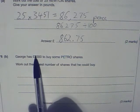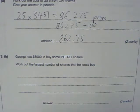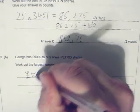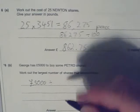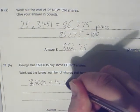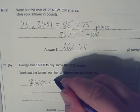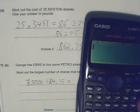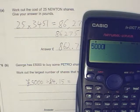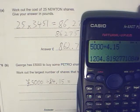So that's what I need to do - divide the number of pounds George has by the price. Got five thousand pounds, and I want to divide that by the price, which is 415 pence. But 415 pence is the same as four pounds fifteen. Since this part is in pounds, this has to be in pounds as well for the calculation to work. So I'm going to do five thousand divided by four pounds fifteen.